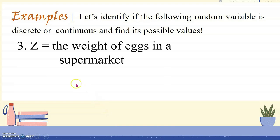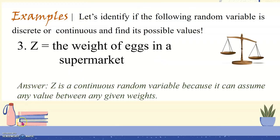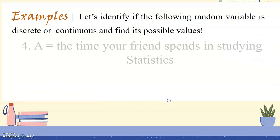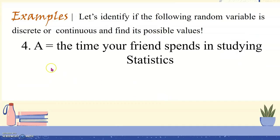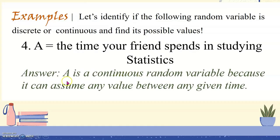Example 3: the random variable Z is the weight of eggs in a supermarket. Z is a continuous random variable because it can assume any value between any given weights. Example 4: random variable A is the time your friend spends studying statistics. Random variable A is a continuous random variable because it can assume any value between any given time.